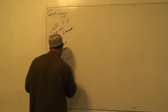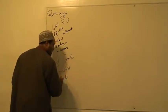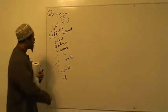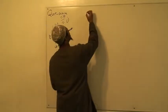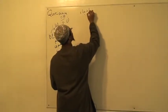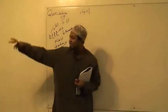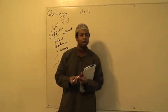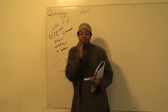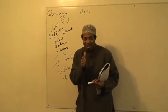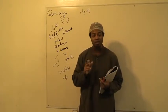Iqlaab — and the only letter it has is Ba. That brings us to our last rule, because there are only four rules in Nun. The last rule is Ikhfa. Ikhfa means to conceal something — like a sutra before you pray, or a curtain over your window. Practically, it means to pronounce the Nun with the letter coming in; it fades in between Idhar and Idgham.